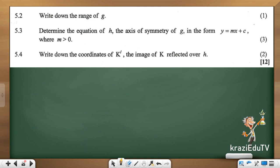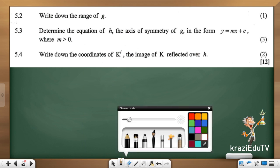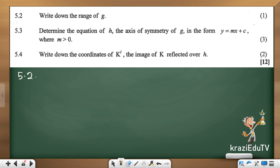Write down the range. Lovely. Your range, 5.2 of a hyperbola, is y being an element of real numbers, but y should not be equal to your asymptote, which is q. y must not be equal to 1, but y is an element of real numbers. Done.